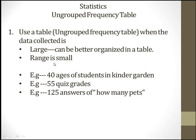The other condition is that the range is small. If the range is small, we can organize the data in an ungrouped frequency table. The range is the largest answer minus the smallest answer. For example, if the largest quiz grade is nine and the smallest is one, then nine minus one gives you eight — that is your range, and it is considered very small.